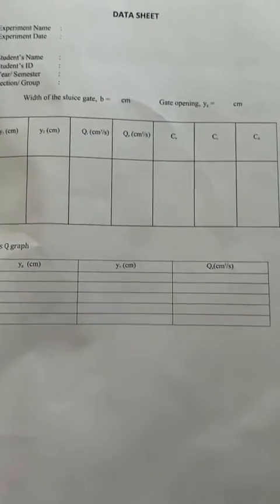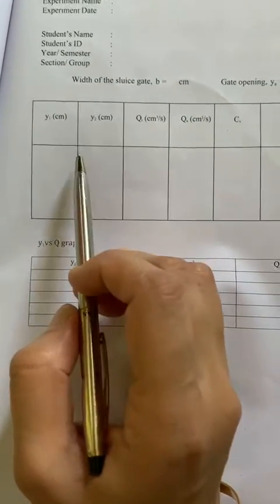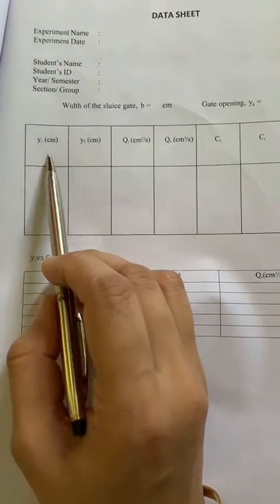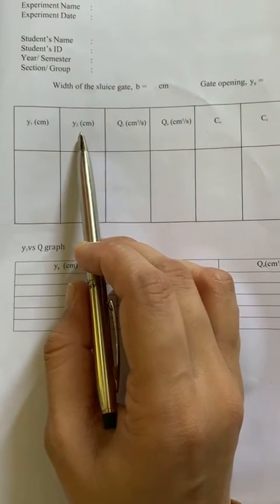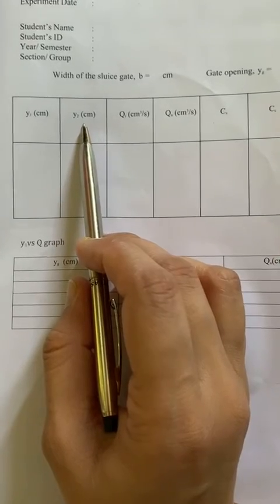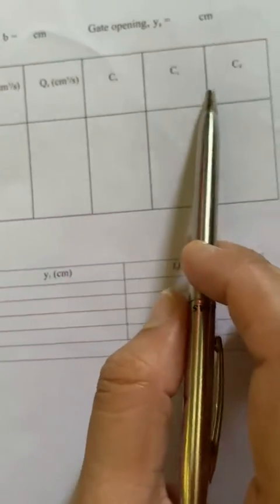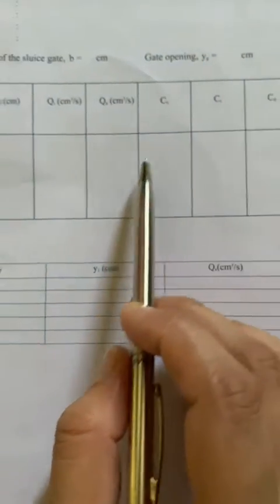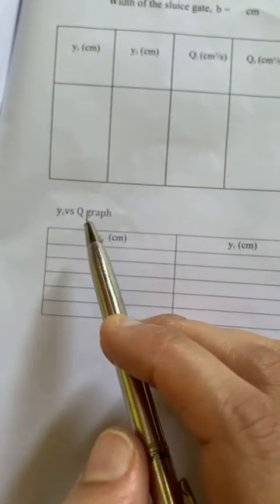In the data sheet, we have to note down the following values: y1, y2 — that is, the depth of water after flowing through the sluice gate — theoretical discharge qt, actual discharge, cv, cc, and cd. In this way, we have to repeat the process for about 3 to 4 readings.